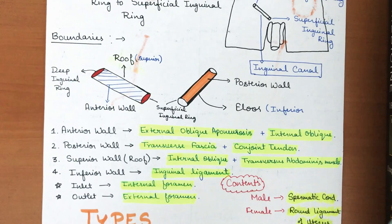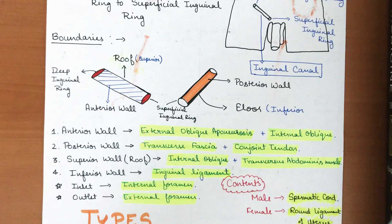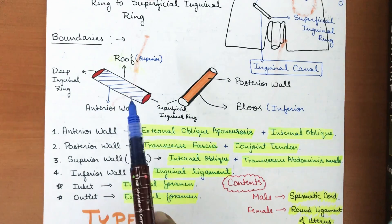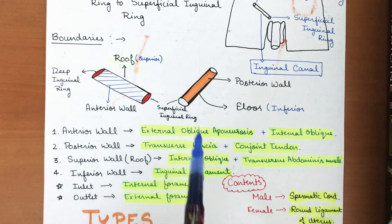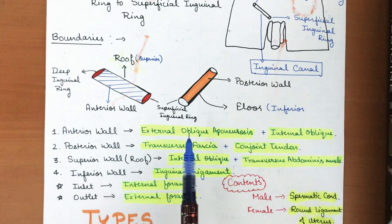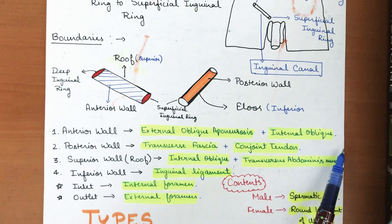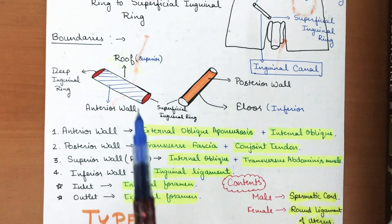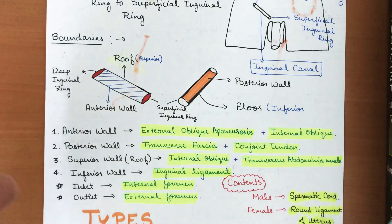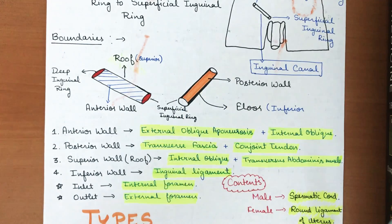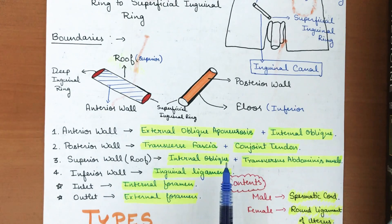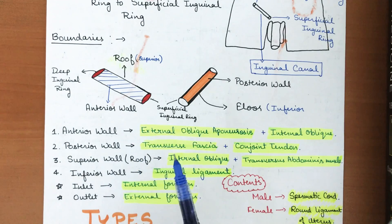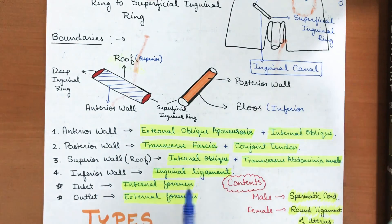We need to see the main anatomical boundaries of the inguinal canal to understand what is happening in inguinal hernias. The anterior wall is covered by the external oblique aponeurosis and internal oblique muscles. The posterior wall is formed by the transverse fascia and the conjoined tendon. The roof or superior wall is formed by the internal oblique muscles and transverse abdominis muscle.